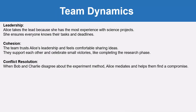For leadership, Alice takes the lead because she has the most experience with science projects — she ensures everyone knows their tasks and deadlines. For cohesion, the team trusts Alice's leadership and feels comfortable sharing ideas; they support each other and celebrate small victories like completing the research phase. For conflict resolution, when Bob and Charlie disagree about the experiment method, Alice mediates and helps them find a compromise.